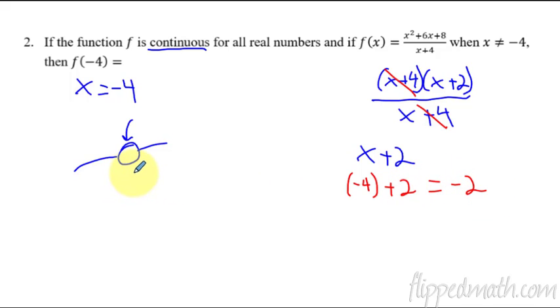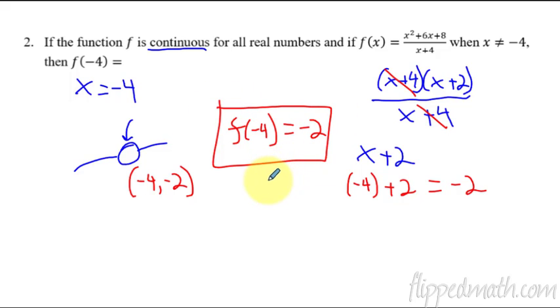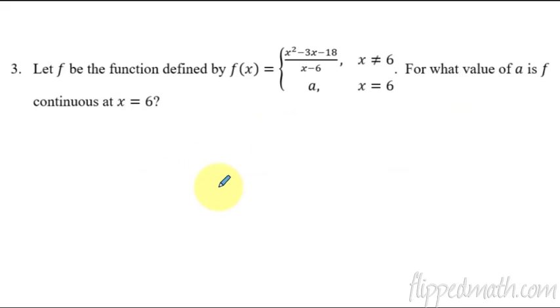And that's going to equal negative 2. So this coordinate point of that hole is negative 4 comma negative 2. So my answer to what's f of negative 4? f of negative 4 is negative 2. That's the answer to that. It's just saying in simple terms, it's just saying what's the y value of the hole right there.